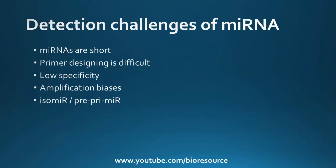Some of the challenges of miRNA detection by qPCR include the fact that miRNAs are very short, making primer design very difficult. Specificity is low, and amplification bias is another issue. miRNA exists in isoform and precursor forms, so differentiating between these at the single-base level is difficult.